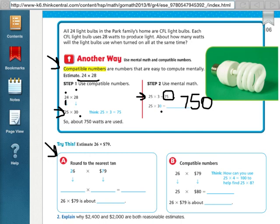So we're going to round 26 to 30 because that 6 will make the 2 go up to a 3, and we're going to round 79 to 80 because that 9 will make the 7 go up to an 8. So now we have 30 times 80.